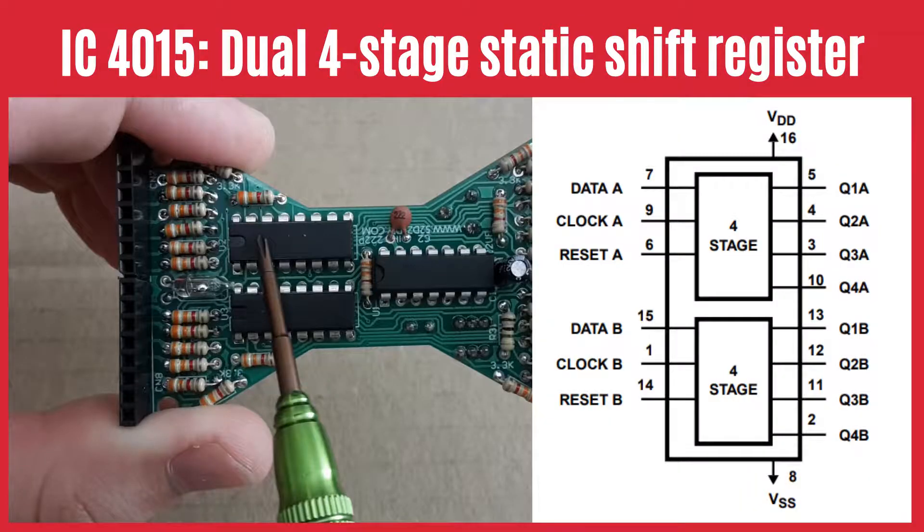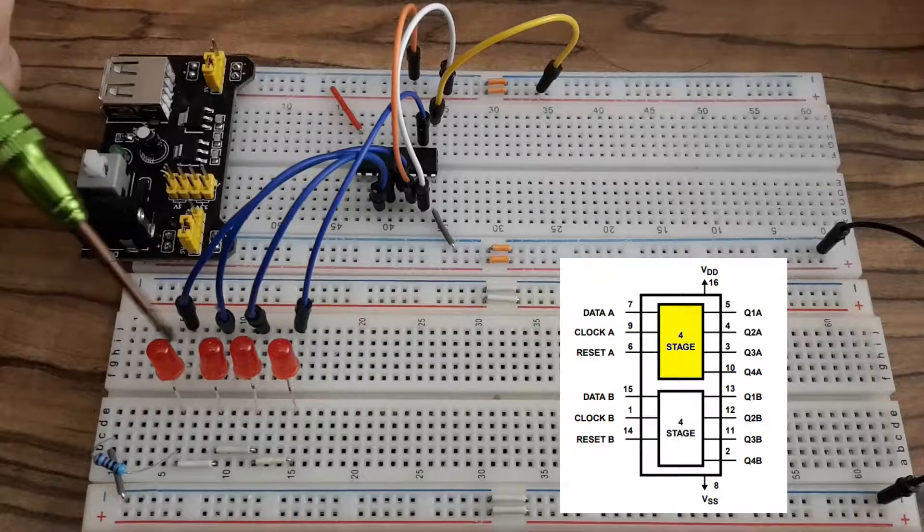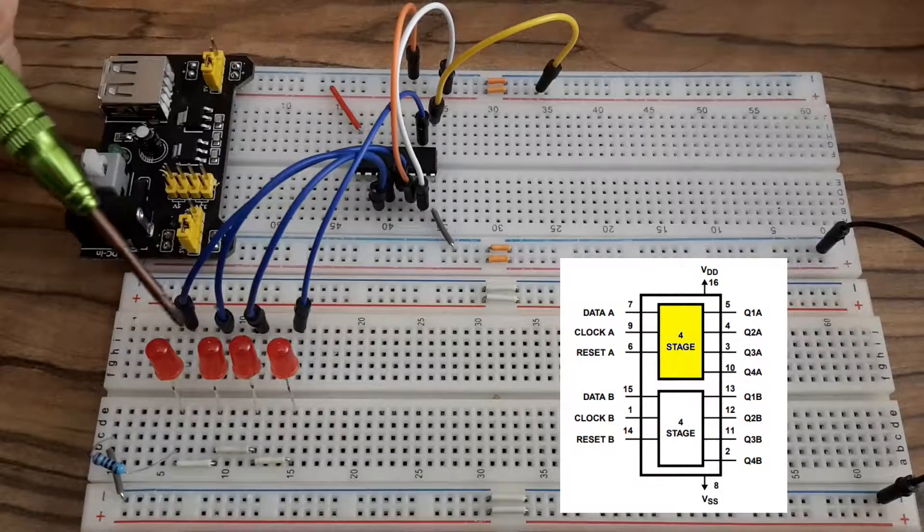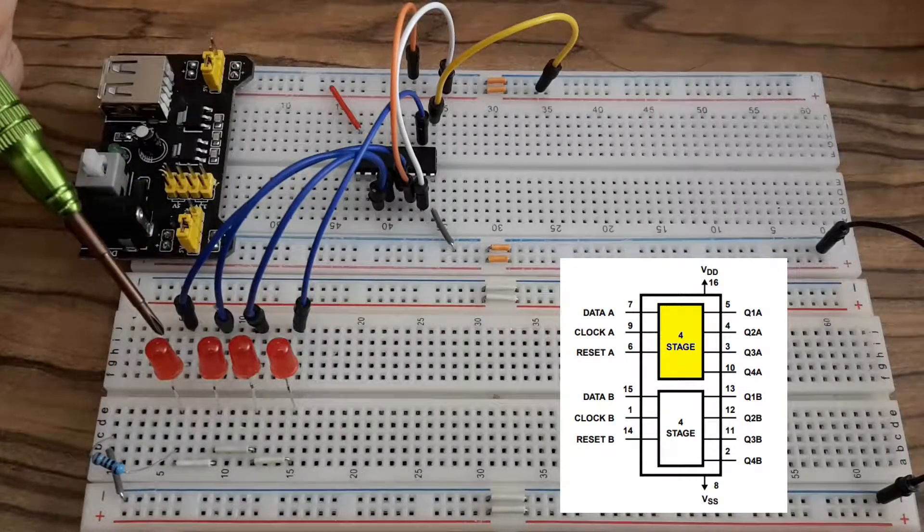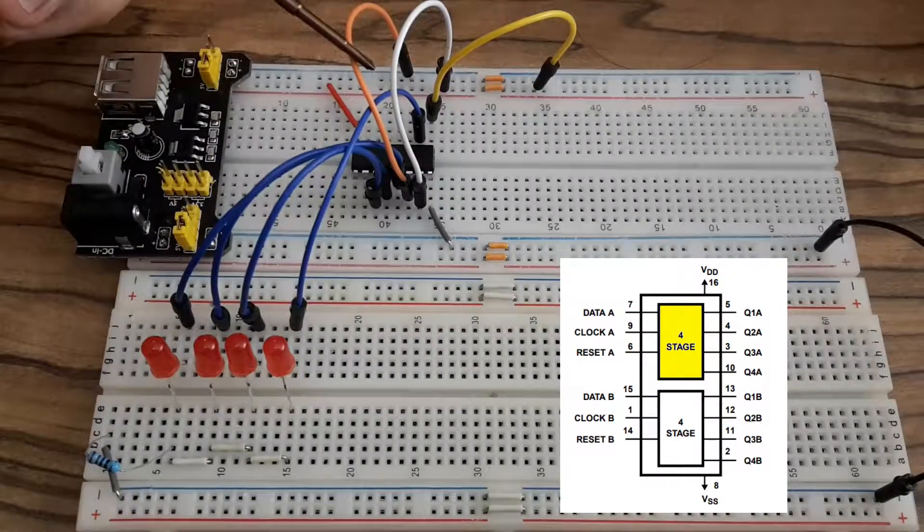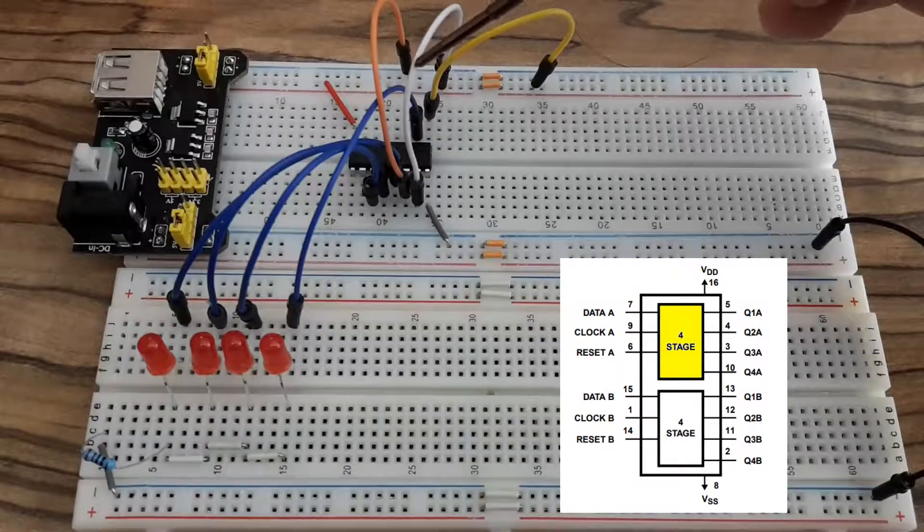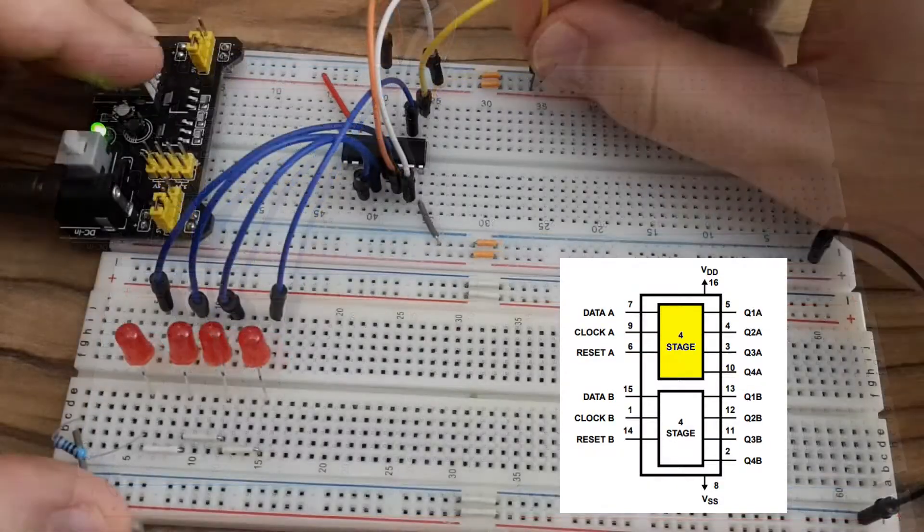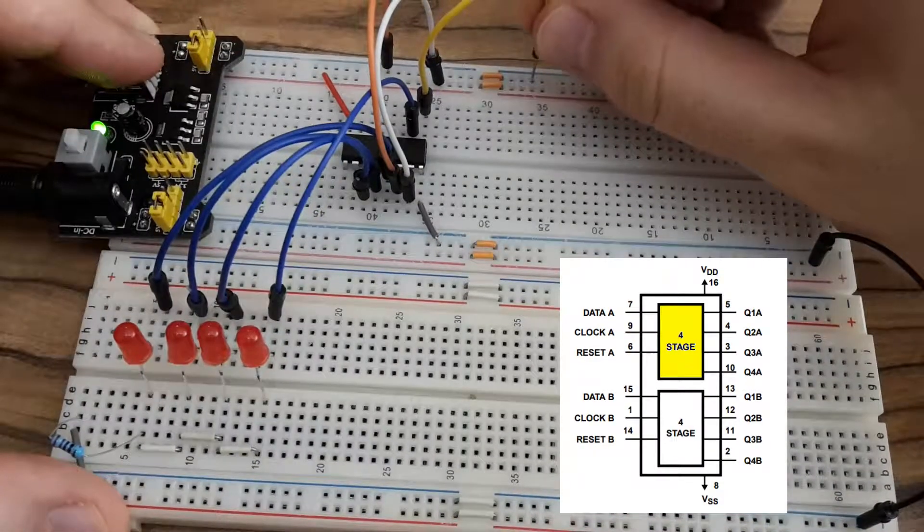The first thing you have to understand are these two ICs. They are 4015 dual four stage static shift registers. Here is an example where I connected the output pins from the first unit to these four LEDs. The orange wire is a reset pin connected to the ground. The white one is the data pin. The yellow wire is the clock input and it works like this.